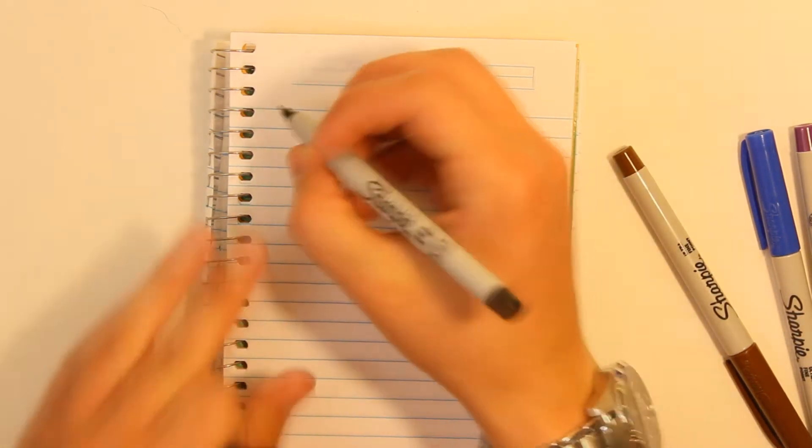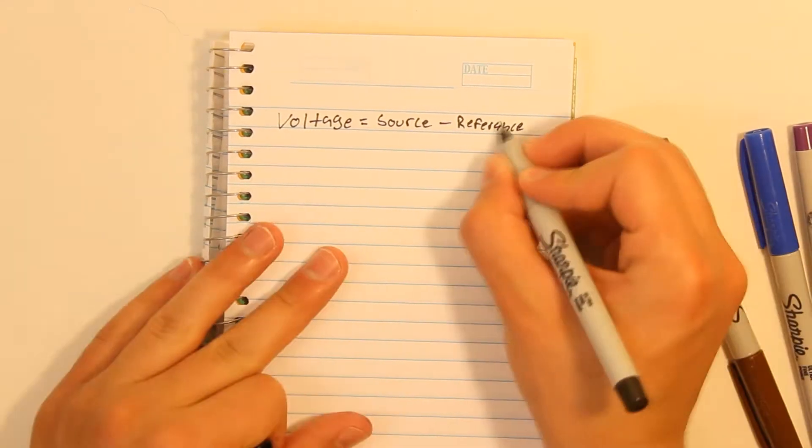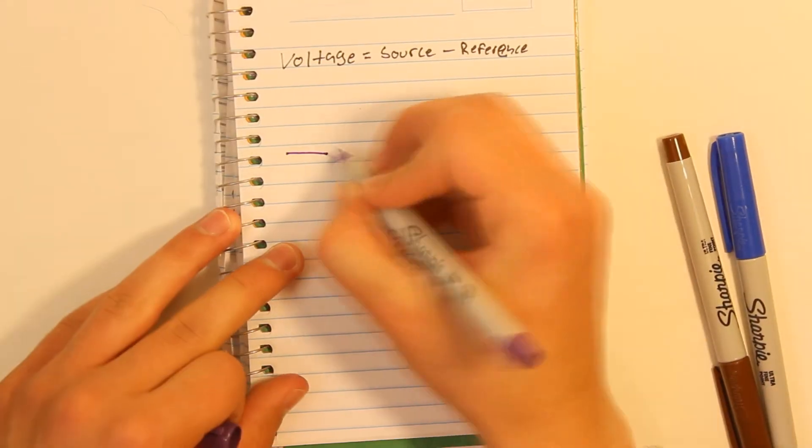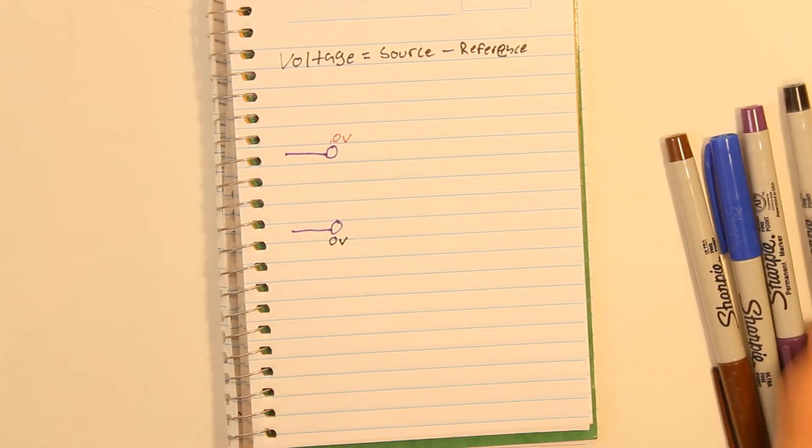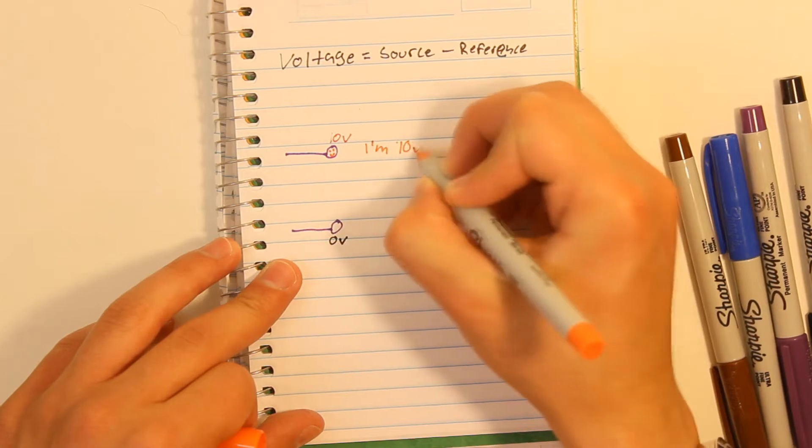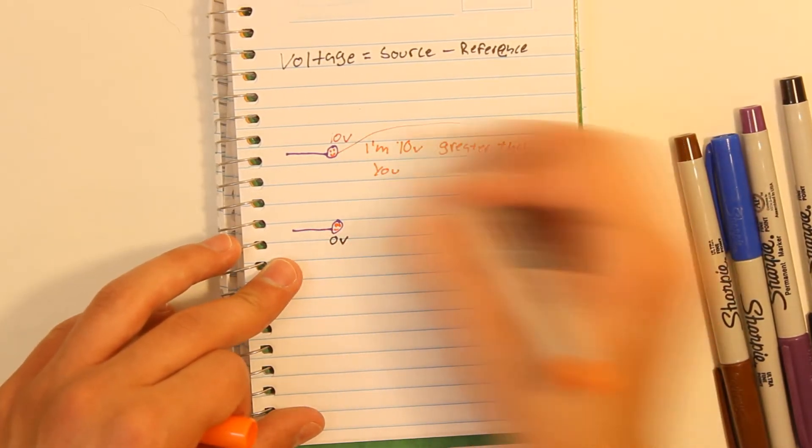There needs to be a reference for the measurement to make sense. This is why voltage is also called an electric potential difference. It is the difference between an electrical reference and an electrical source. On a voltage source like a battery, the reference is ground or negative lead. The source is the positive lead. To say something is 10 volts would be to say that the energy potential of the positive is 10 volts greater than its reference.